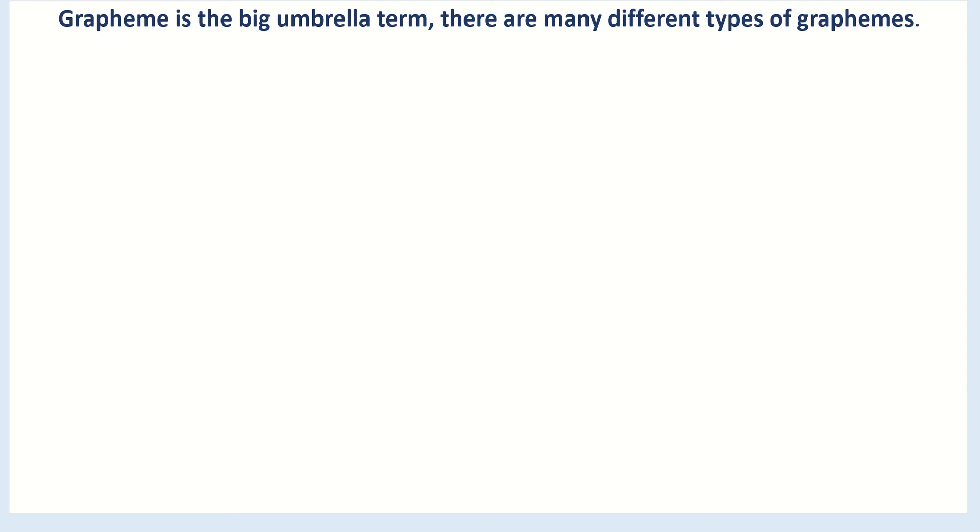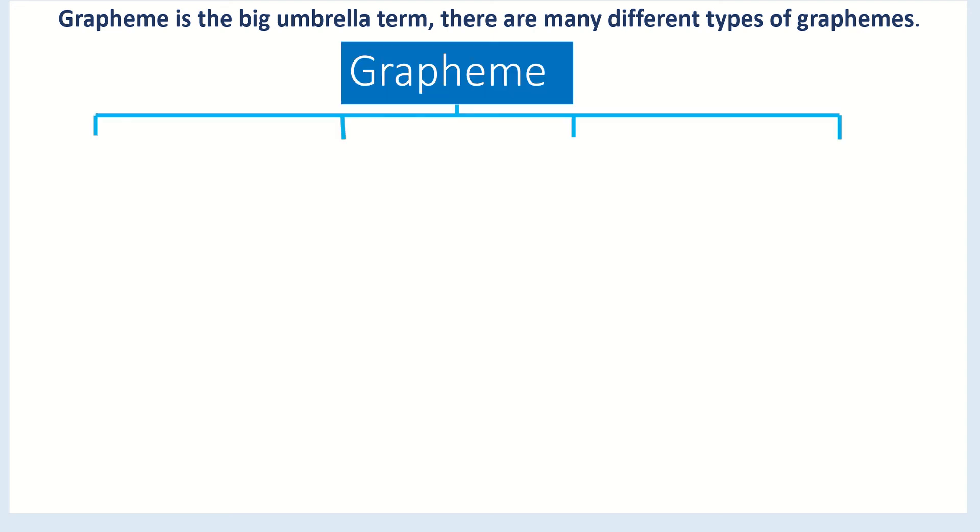Grapheme is the big umbrella term. There are different types of graphemes. We can have a graph. A graph is where one letter equals one phoneme. Here are some examples, and this is the first thing our kindergarten children are going to learn, that one letter equals one phoneme, and this is how they start to sound, to spell, and sound to read.